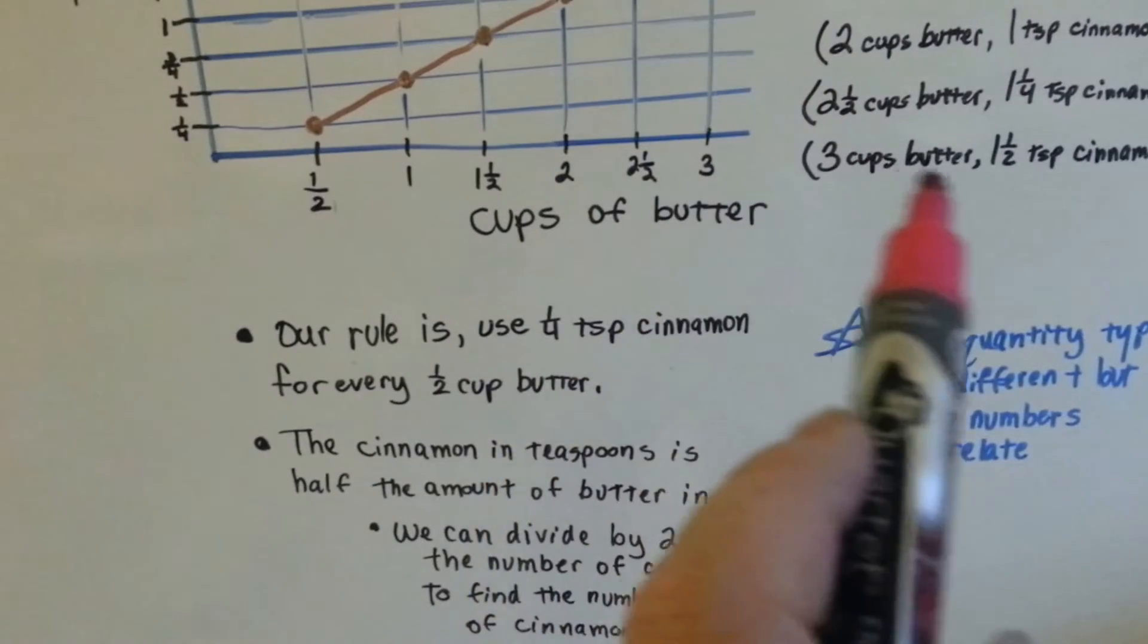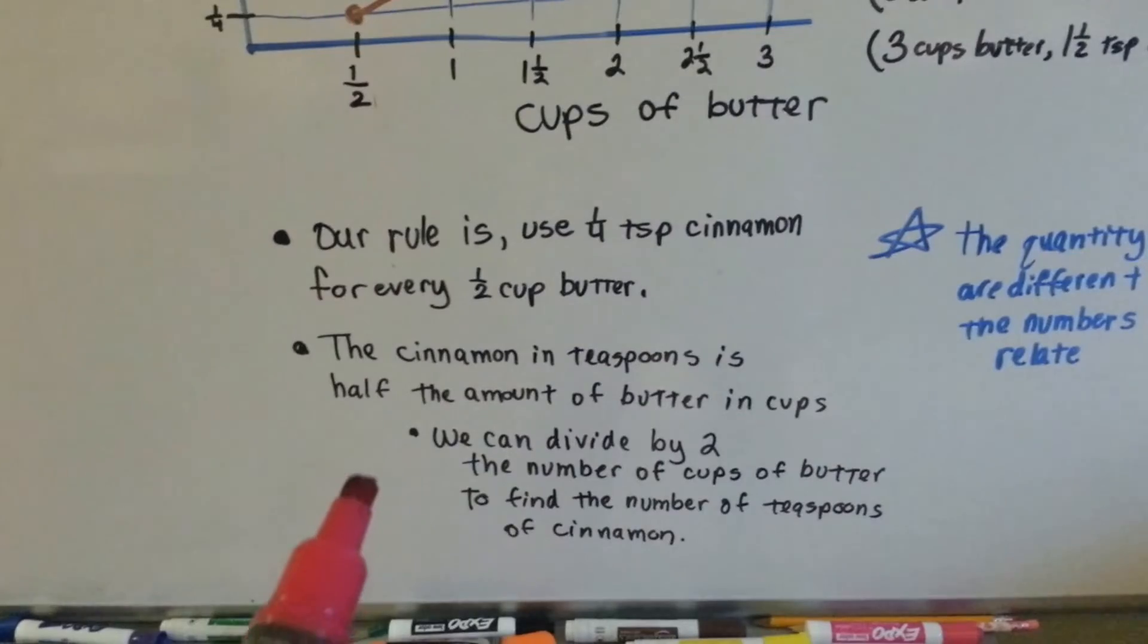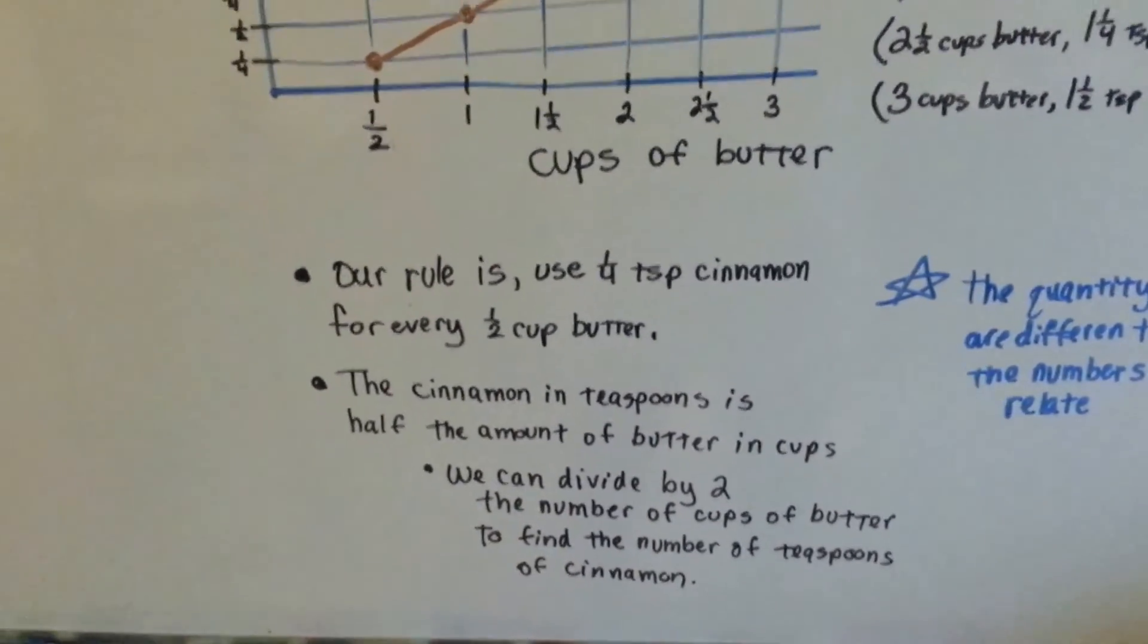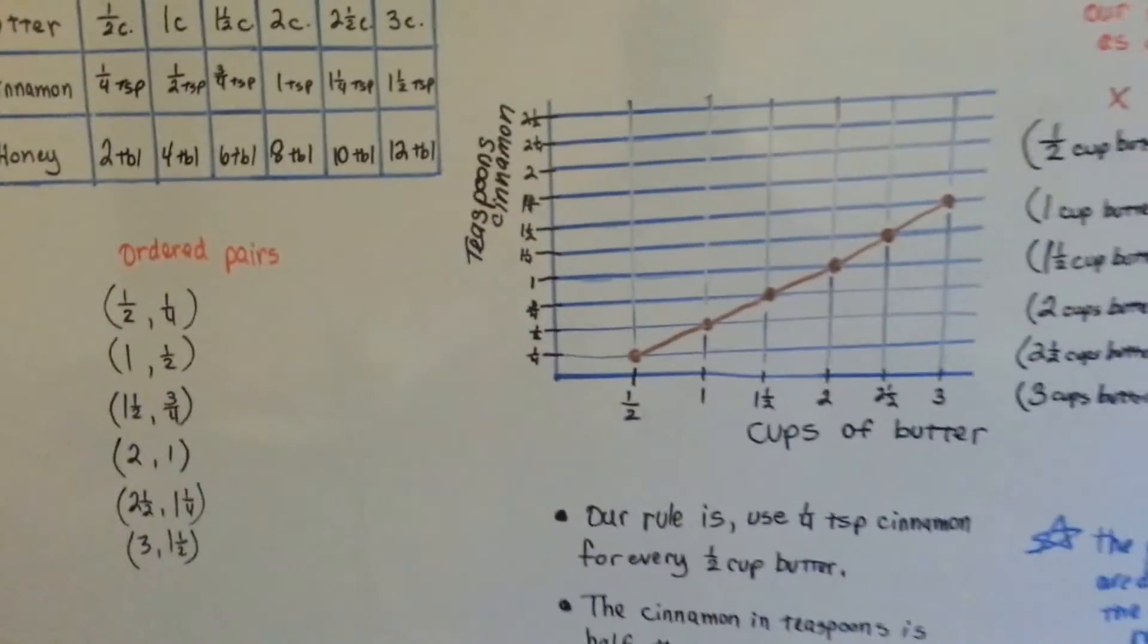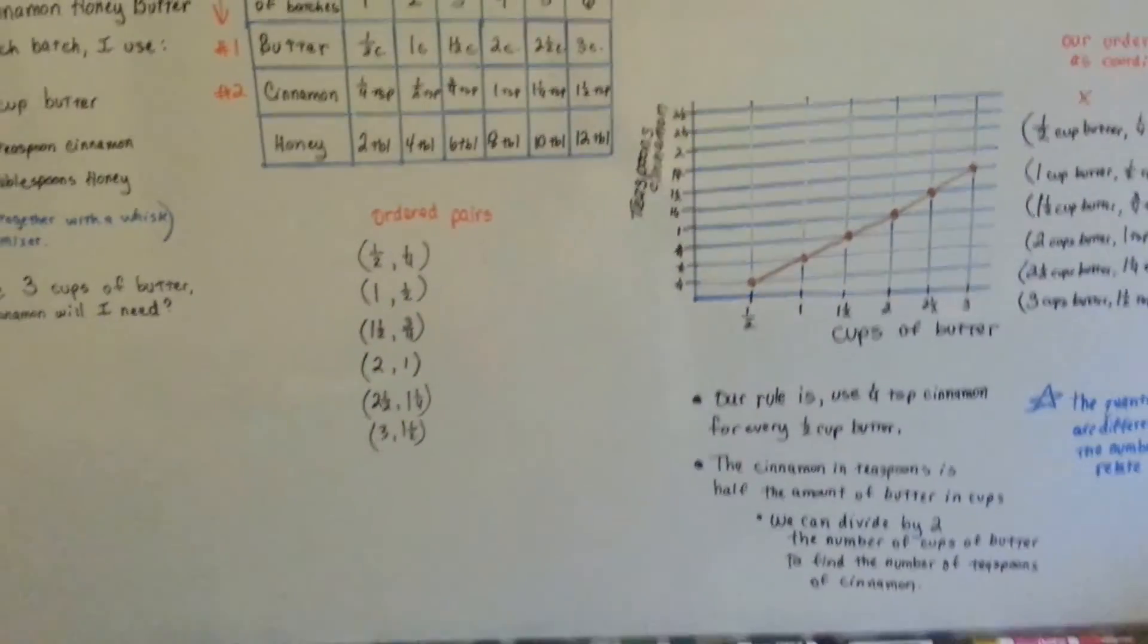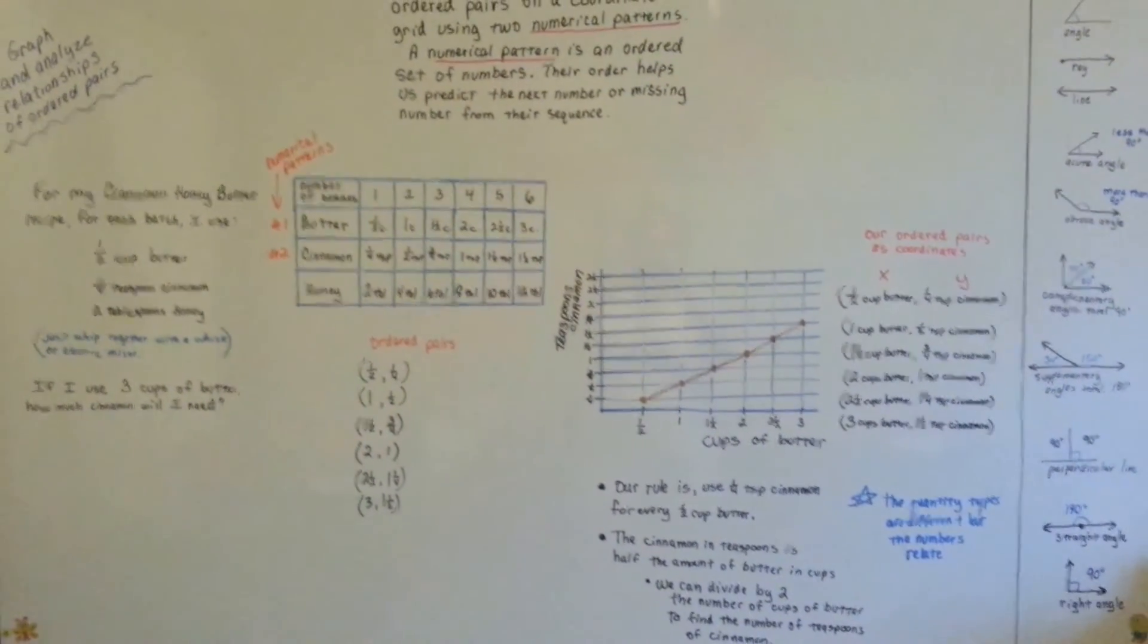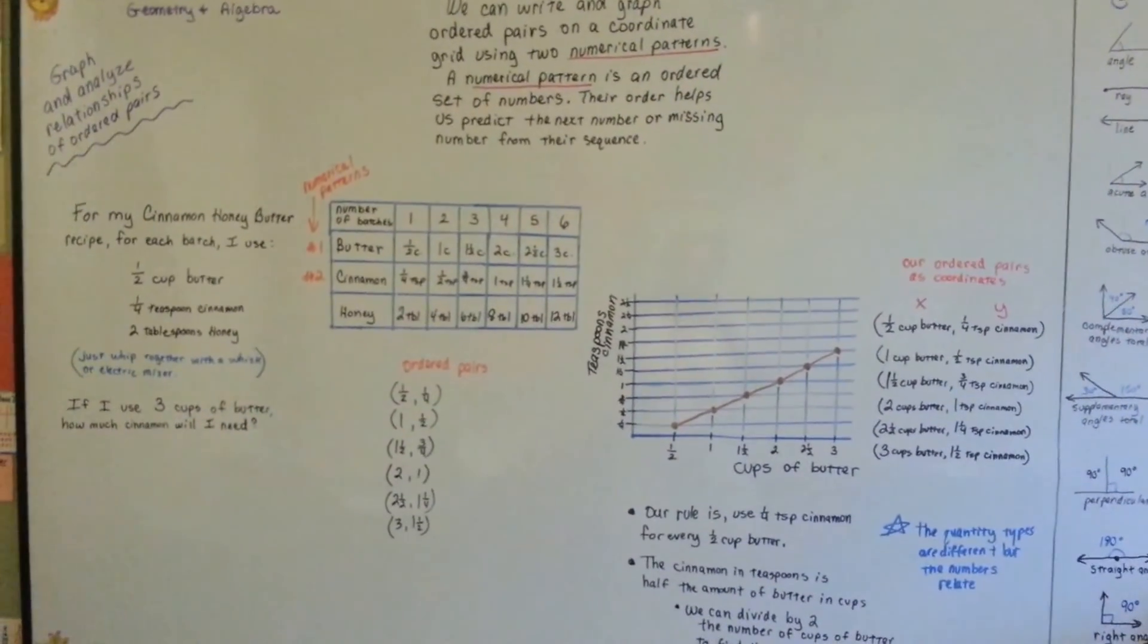One to two, one and a half to three. The numbers still double. We can divide by two the number of cups of butter to find the number of teaspoons of cinnamon. That's the relationship. So that's how we graph and analyze relationships of ordered pairs. This is the end of our chapter, and we're moving on to chapter 10. See you there.